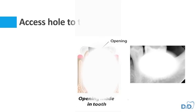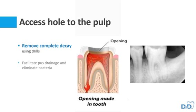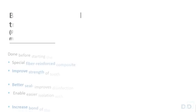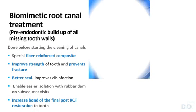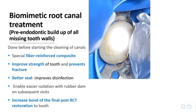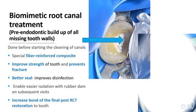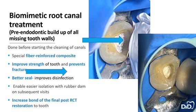First, an access hole to the pulp will be made using drills to remove the decay and facilitate pus drainage. Once the canals are located, pre-endodontic buildup of all the missing tooth walls will be done to improve the strength of the tooth and prevent fracture.